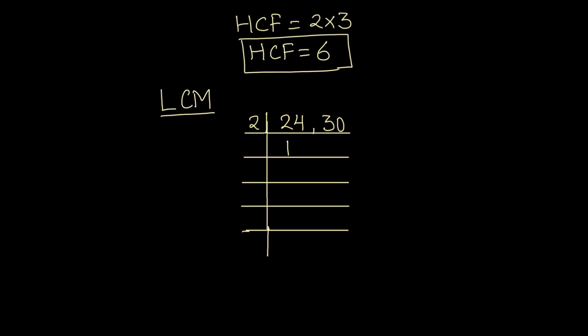Dividing 24 by 2 gives 12, and 30 divided by 2 gives 15. Again we divide 12 by 2 to get 6; 15 is not divisible by 2 so we write it as is. Again, 6 is divisible by 2, giving 3; and 15 is still not divisible by 2, so we write it as is.